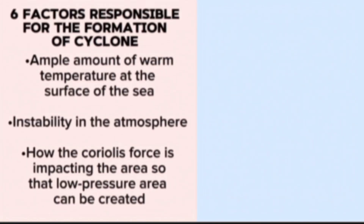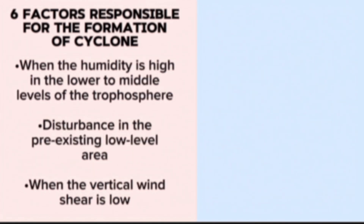There are six factors that can be held responsible for the formation of a cyclone. First, we have an ample amount of warm temperature at the surface of the sea. Second, the instability in the atmosphere. Third, how the Coriolis force is impacting the area so that a low-pressure area can be created. And the fourth one is that humidity is high in the lower to middle levels of the troposphere. Fifth is the disturbance in the pre-existent low-level area.